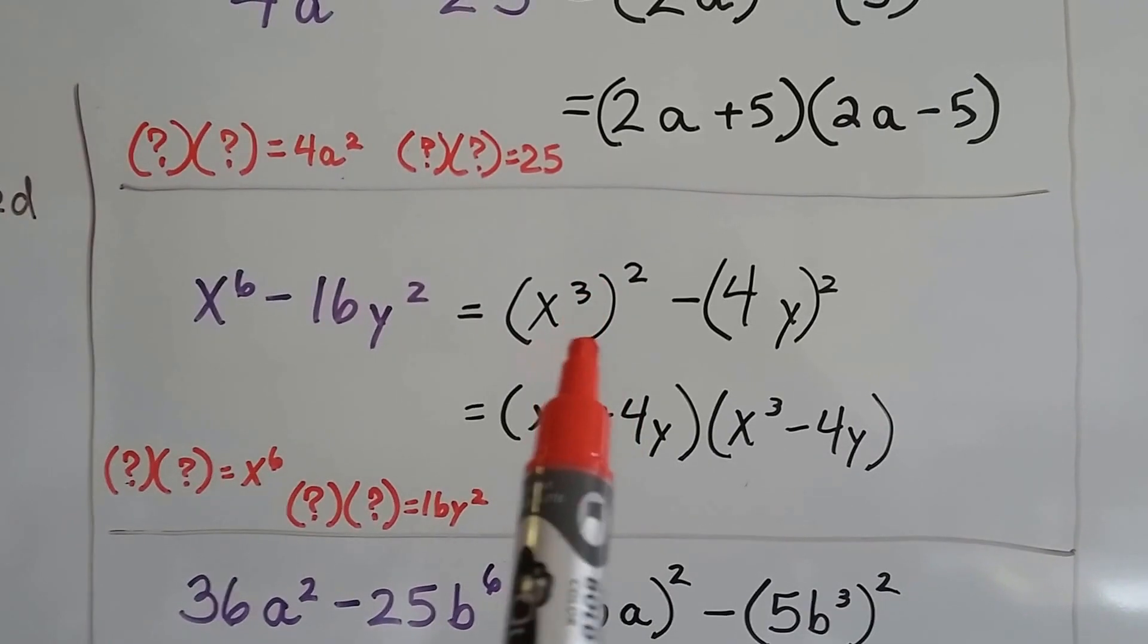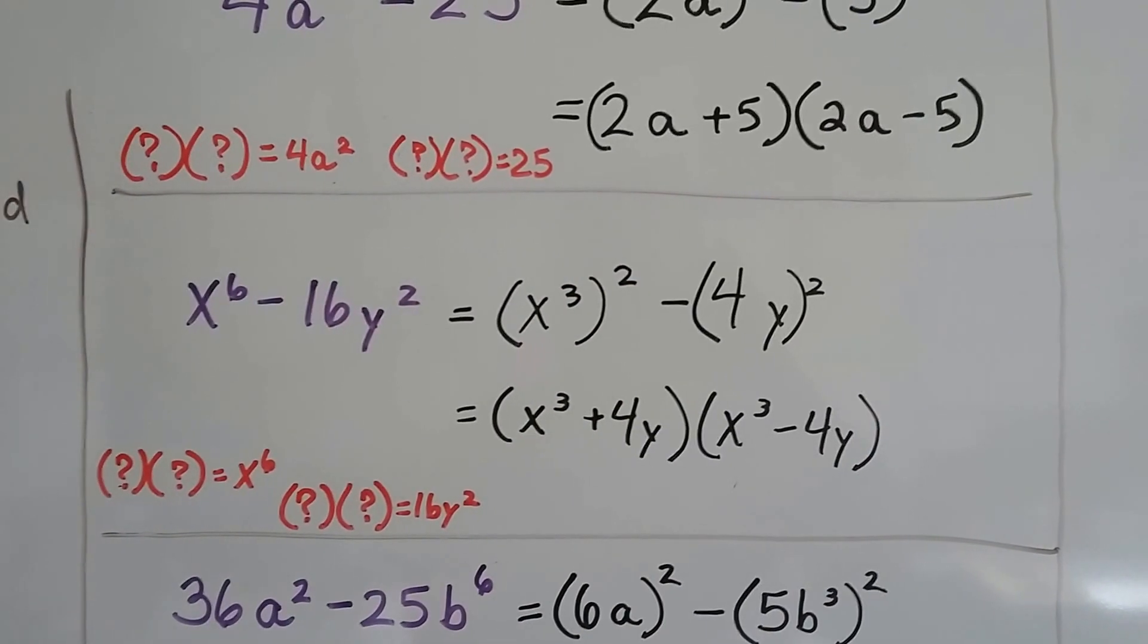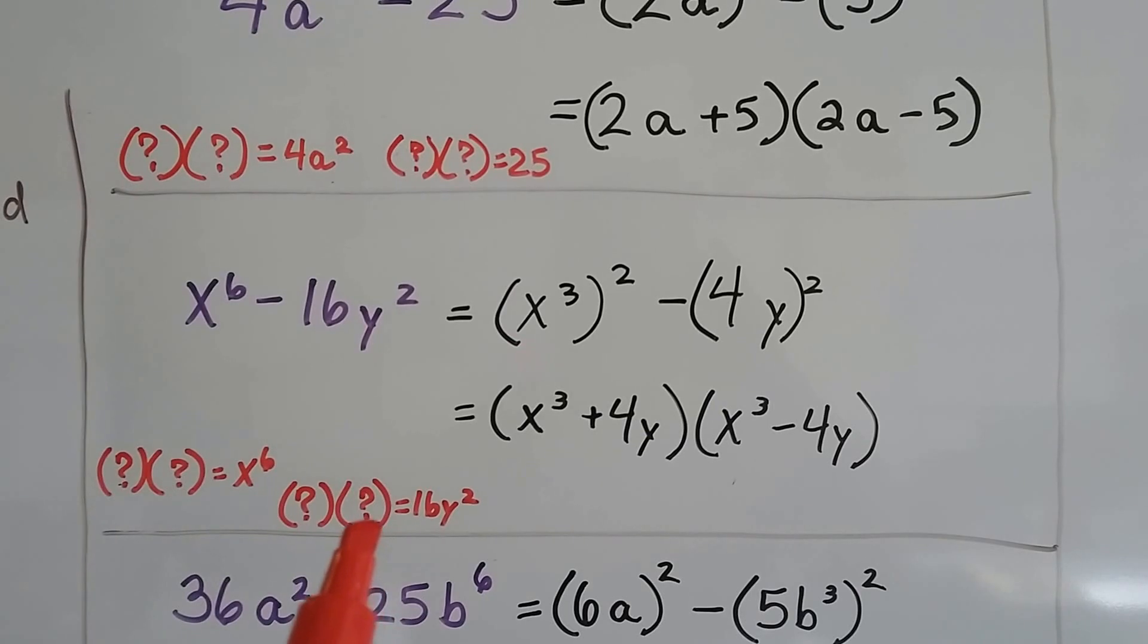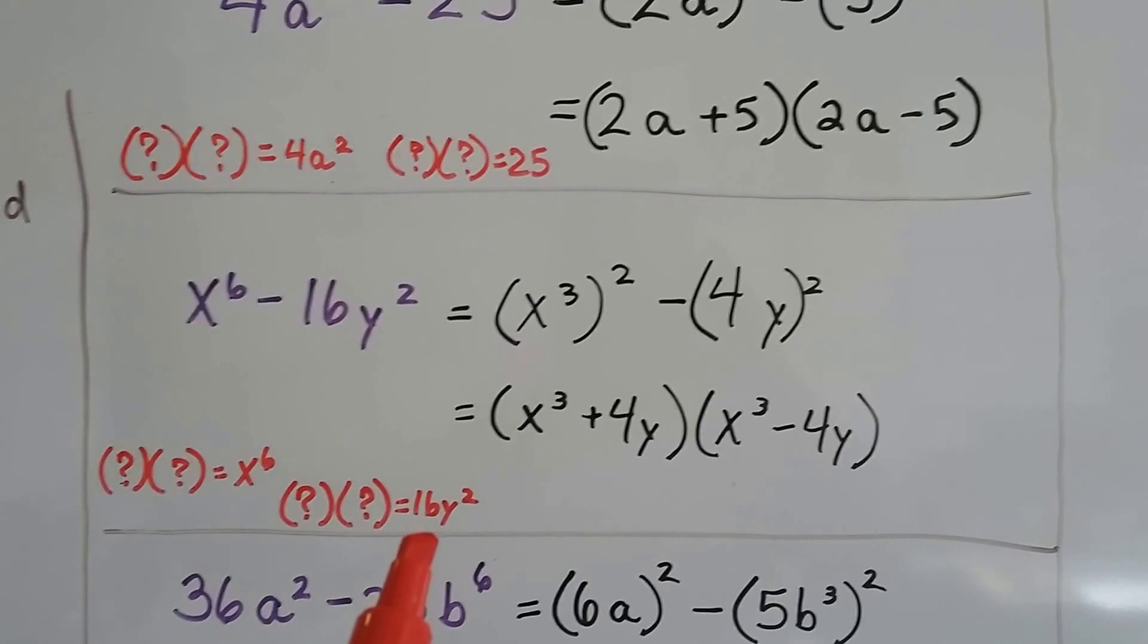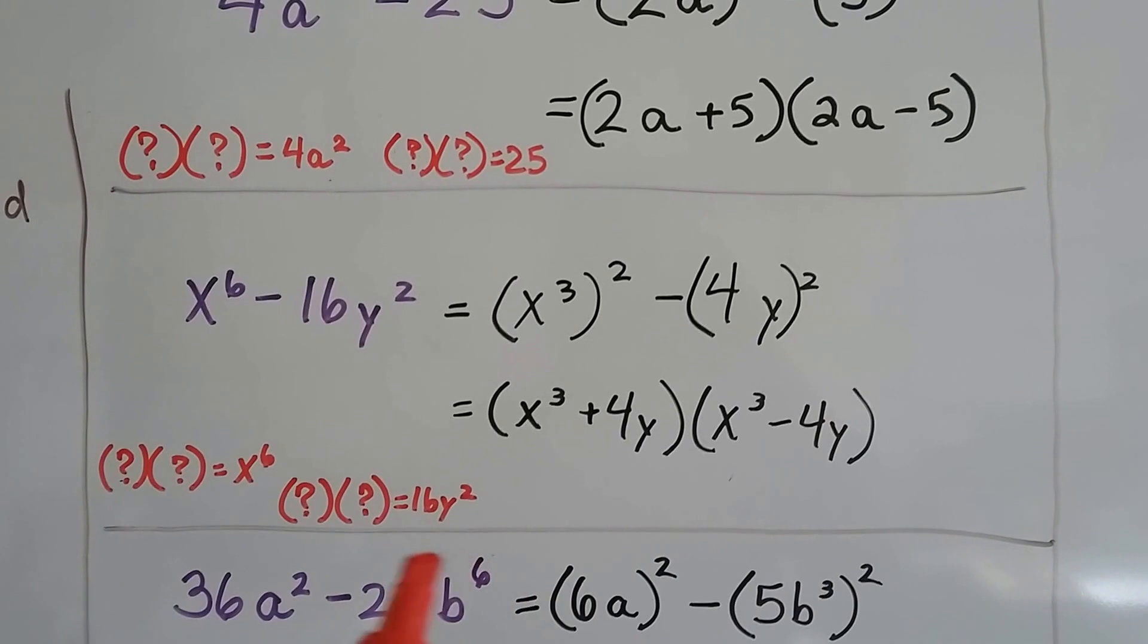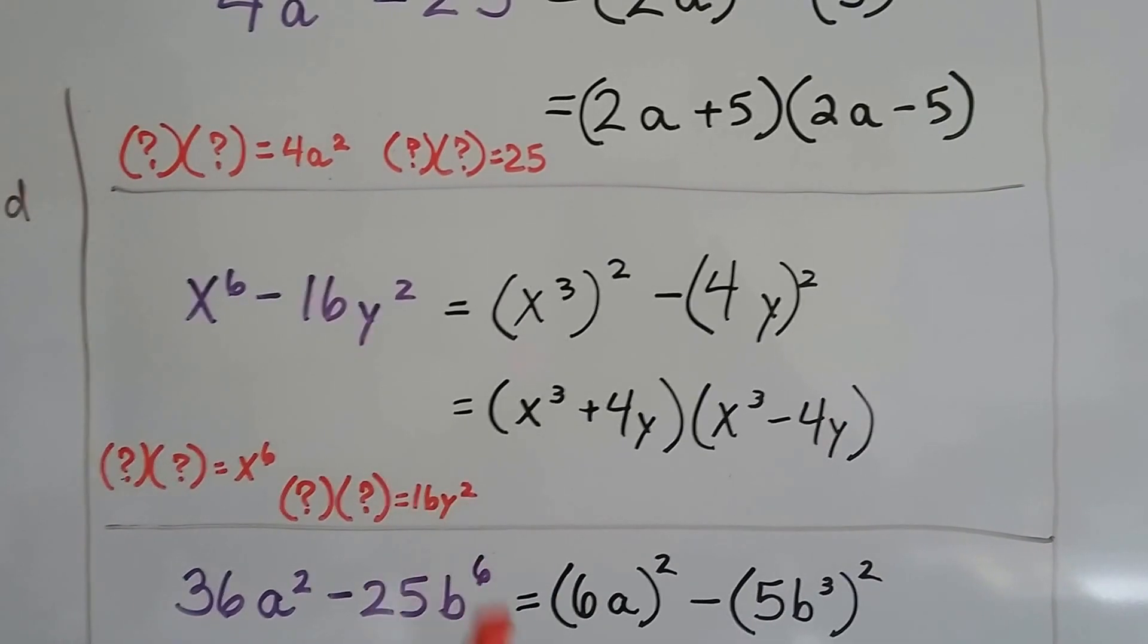So we have (x³)². And what times what would be 16y²? We could do 4y times 4y. The two y's together would give us that square.